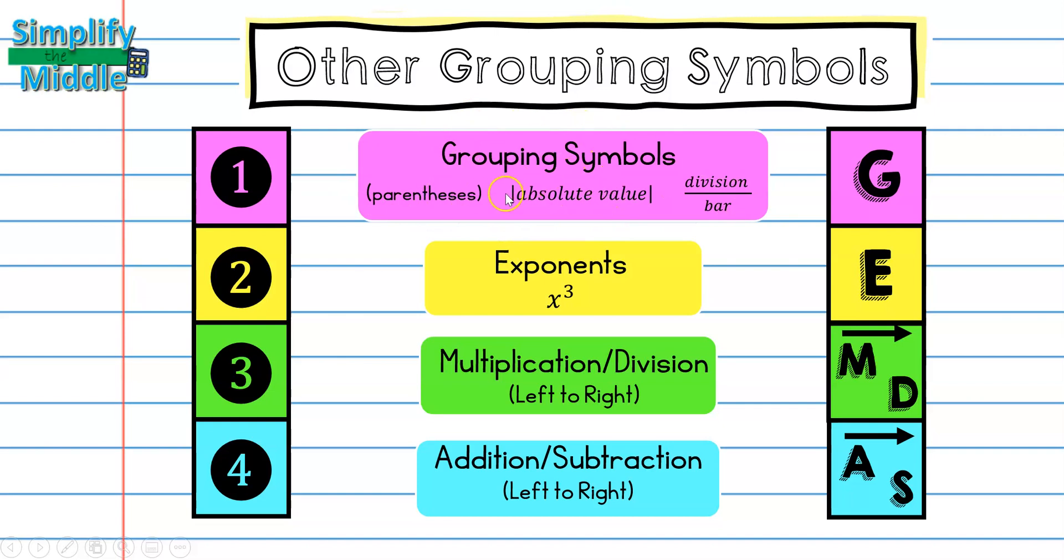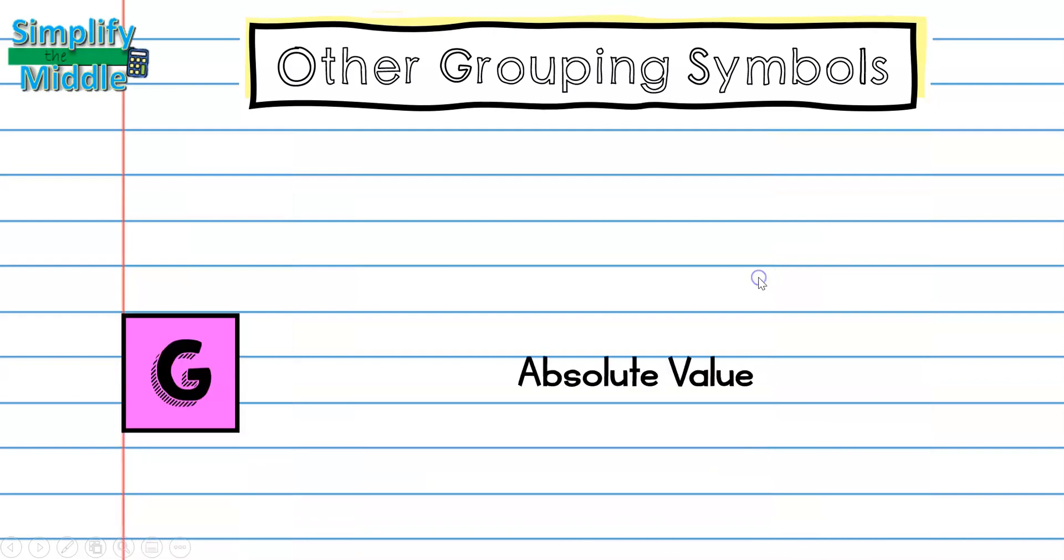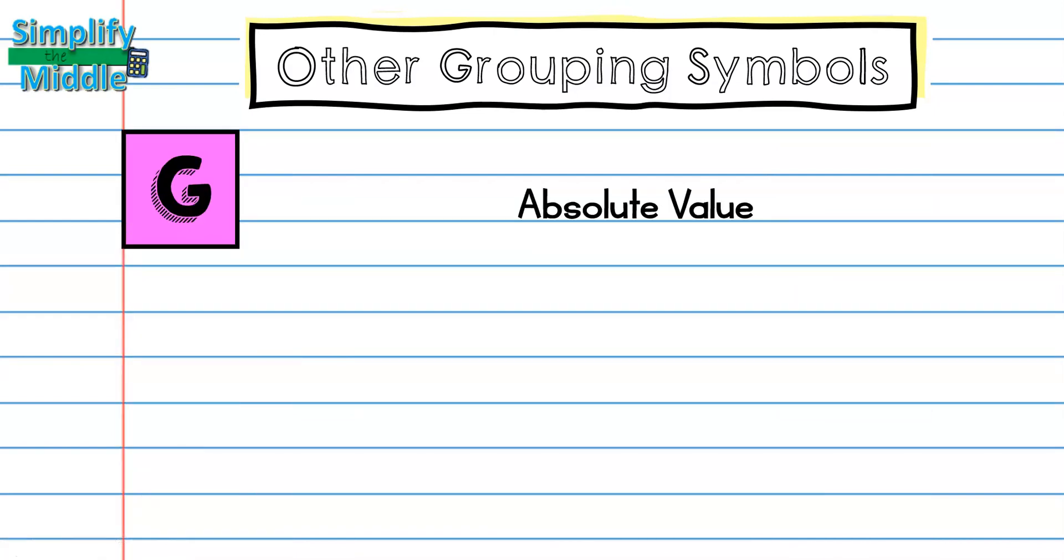So let's discuss absolute value first. We use absolute value as a grouping symbol. Let's go ahead and start out with these two problems. We will put our triangles around them to help us remember we work one line at a time.